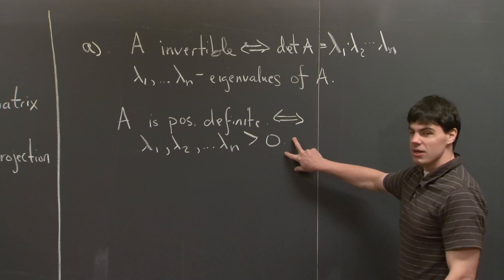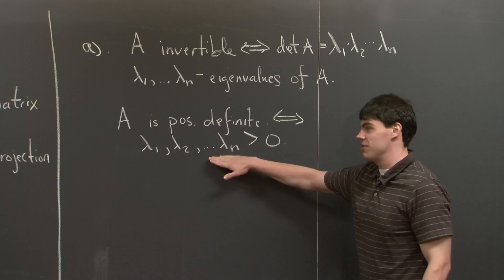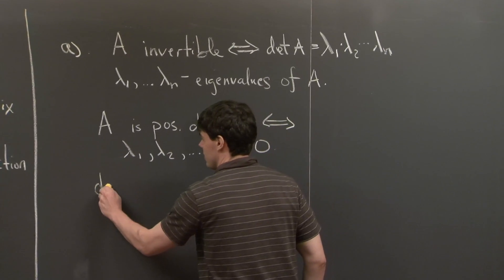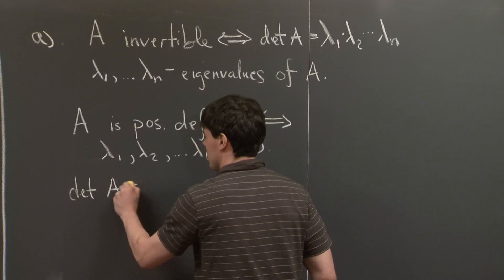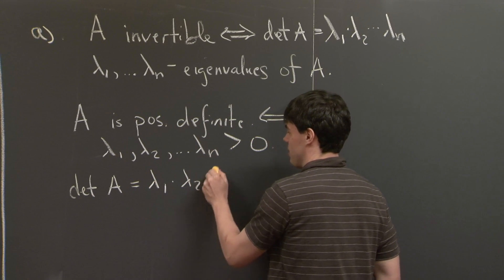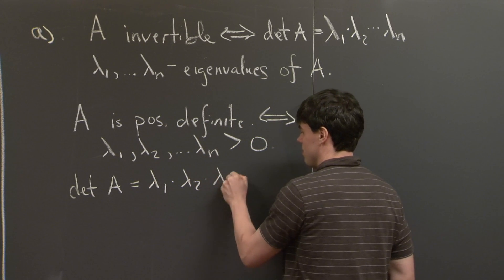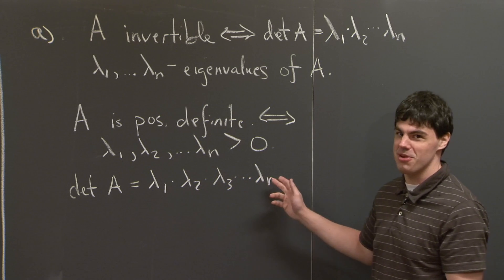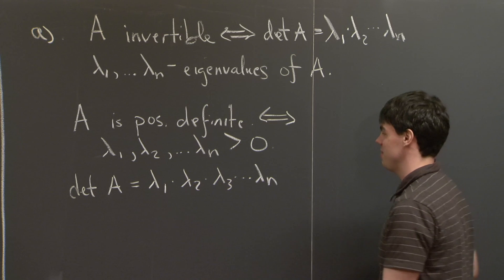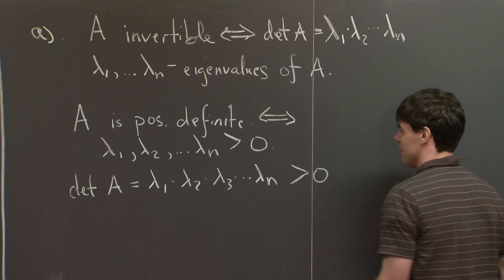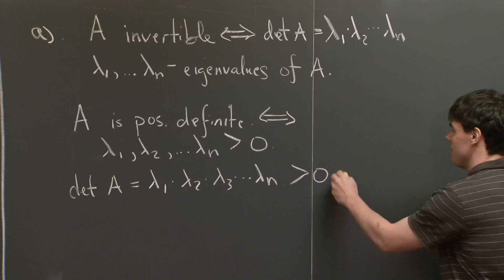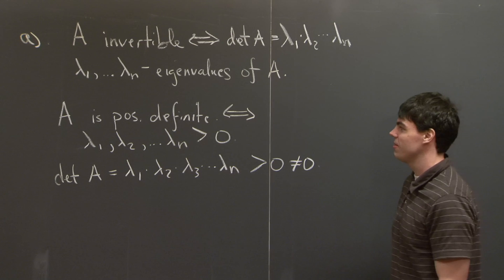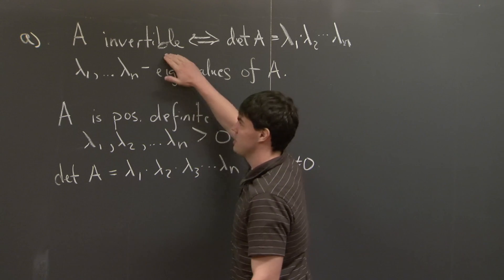So if I have a whole bunch of eigenvalues and each of them are bigger than 0, what does this say about the determinant of A? Well, I can take the product of all these eigenvalues. The product of a bunch of positive numbers must also be positive. So if the quantity is positive, it certainly can't equal 0. This proves that the determinant of A is not equal to 0, hence A must be invertible.